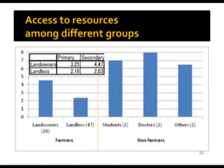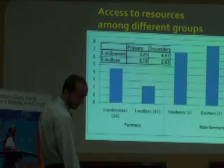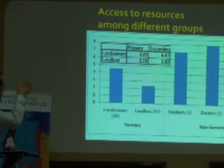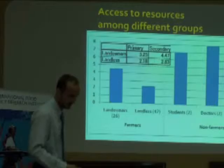This is what it looks like when you split the sample by occupation. Among the farmers, those who are socioeconomically better off have higher access to resources in the external society than those who are landless and can be considered poor. There are very few non-farmers in the sample, and they all have very high access outside. Both education and socioeconomic dimensions are important.